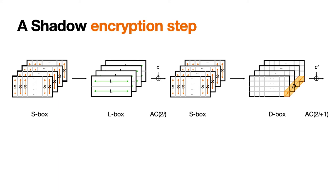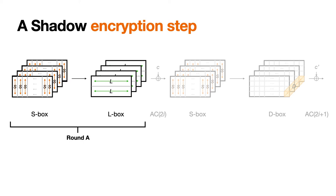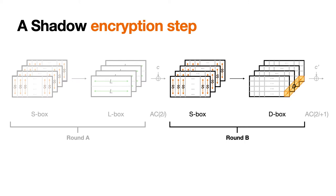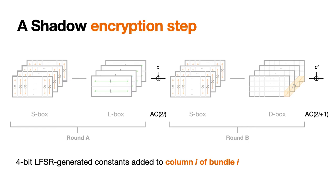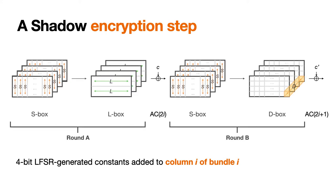Now let's talk about the encryption part. Both versions iterate 6 steps. One step is made of 2 rounds, Round A and Round B, and in between those rounds there are some round constant additions. Round A first applies a 4-bit S-Box on each column of each bundle, then the L-Box transforms the first two rows and the last two rows of each bundle. Round B starts with the same layer as Round A but has a different linear layer D, whose purpose is to provide diffusion between the bundles of the state. Each bit of each bundle is modified by the application of a NearMDS matrix, and constants are added, generated using an LFSR, added to column I of bundle I. A complete Shadow requires 6 steps.